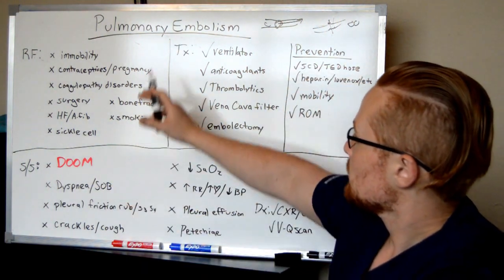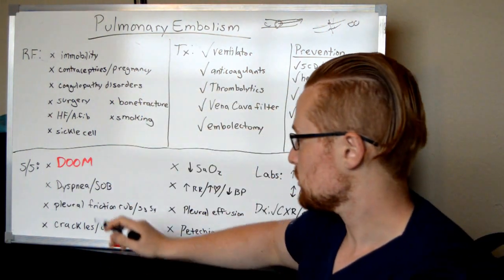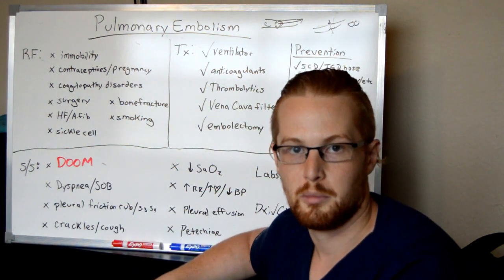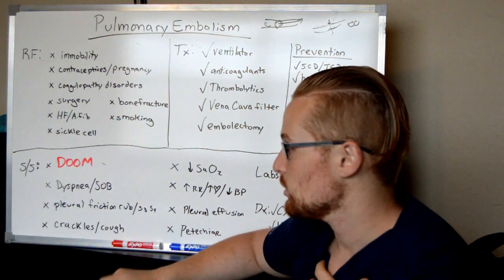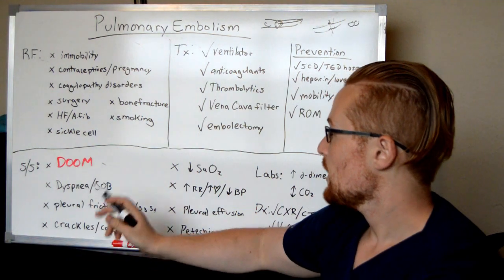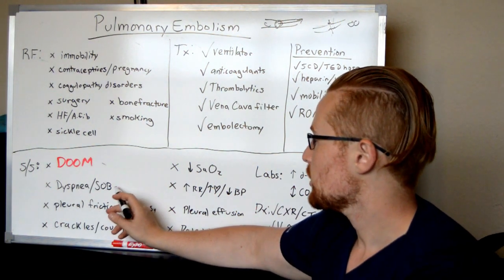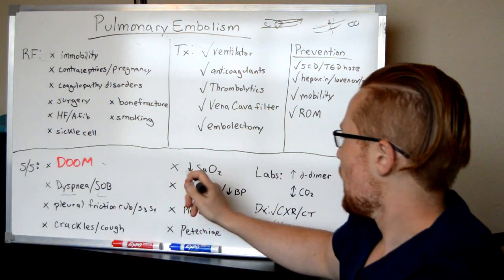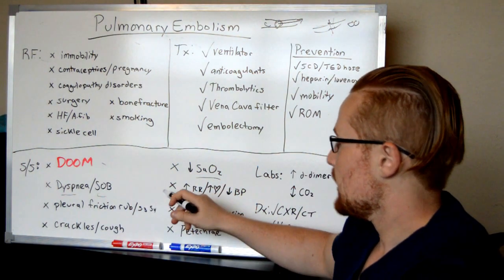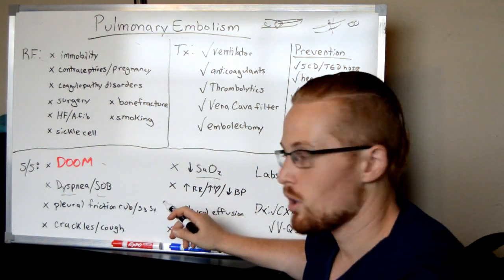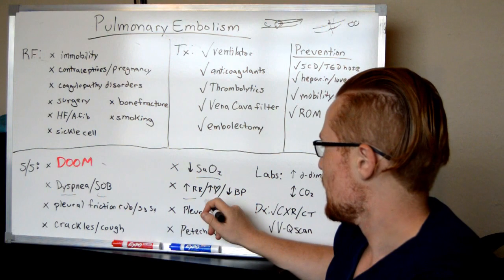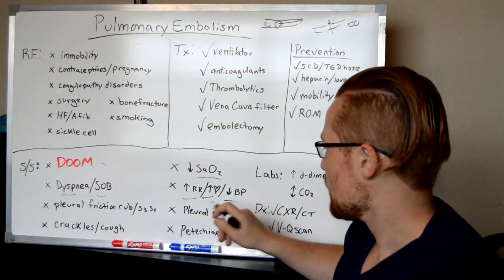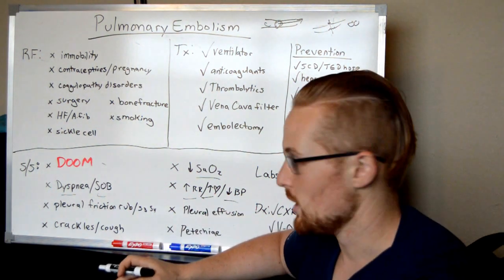What are signs and symptoms of pulmonary embolism? This is something you'll see on tests. An impending feeling of doom — the patient is going to have a high level of anxiety. The lungs aren't working properly, so you'll have shortness of breath, trouble breathing, and low oxygen levels. To compensate for the low oxygen levels, you're going to have an increased respiratory rate and increased heart rate, but you're going to have dropping blood pressure because the blood isn't going anywhere.